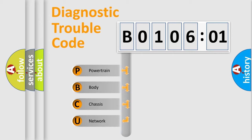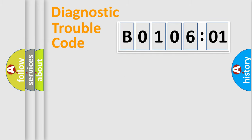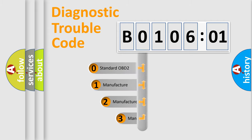We divide the electric system of automobiles into four basic units: Powertrain, Body, Chassis, and Network. This distribution is defined in the first character code.